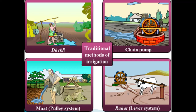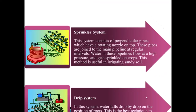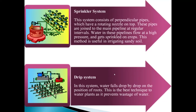The traditional methods of irrigation are: diltli, chain pump, mod or pulley system, and rahat lever system. The two modern methods of irrigation are the sprinkler system and the drip system.